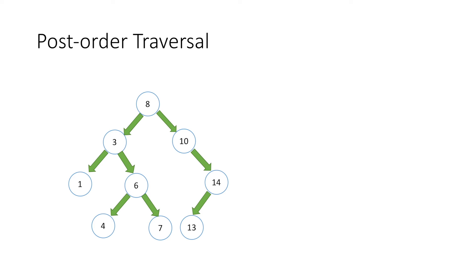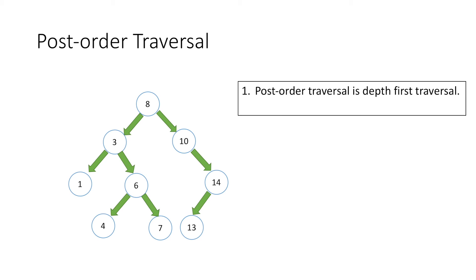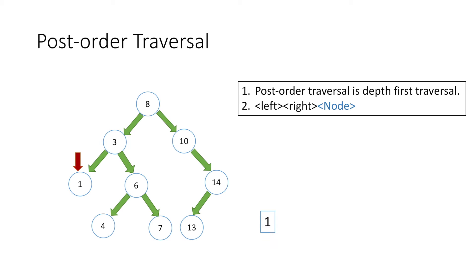Now let's look at post-order traversal using the same example. Post-order traversal is a depth first traversal where we follow the rule left-right-node. From the current node we move left until we cannot, then go right until we cannot, and finally print the value of the node. Starting with the root node, we move left to node 3, then left again to node 1. Node 1 has no left or right child, so we print its value which is 1 and mark it as traversed.